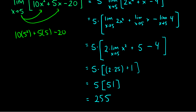Plugging five in directly: ten times five squared plus five times five minus twenty. Ten times twenty-five is two hundred fifty, plus five times five is twenty-five, minus twenty. So this is two hundred seventy-five minus twenty, which is just two hundred fifty-five. We can see that both methods give exactly the same answer. One is quicker, of course, but taking each limit law step by step will be very useful for more complicated questions. If you have any questions, please leave them in the comments below and I will do my best to answer them.